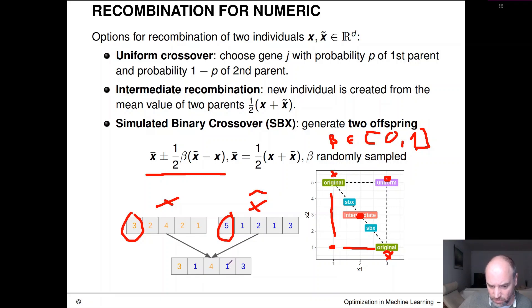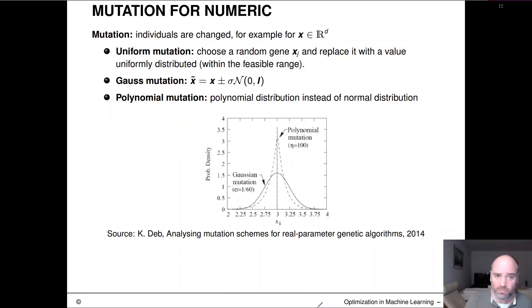And then in uniform mutation, you would cross out this guy, sample something completely fresh, maybe a 7, and from the feasible range and plug that in there. And we would do that for one gene or for multiple genes, usually for only a few genes. And maybe these are sampled again with a low probability.